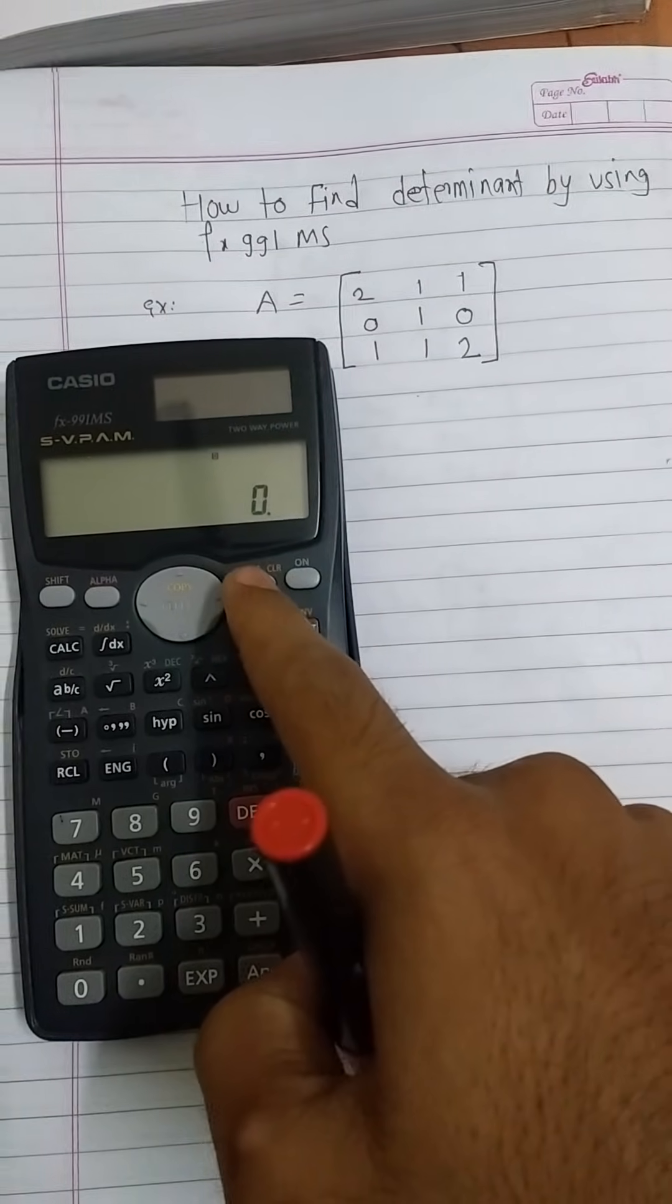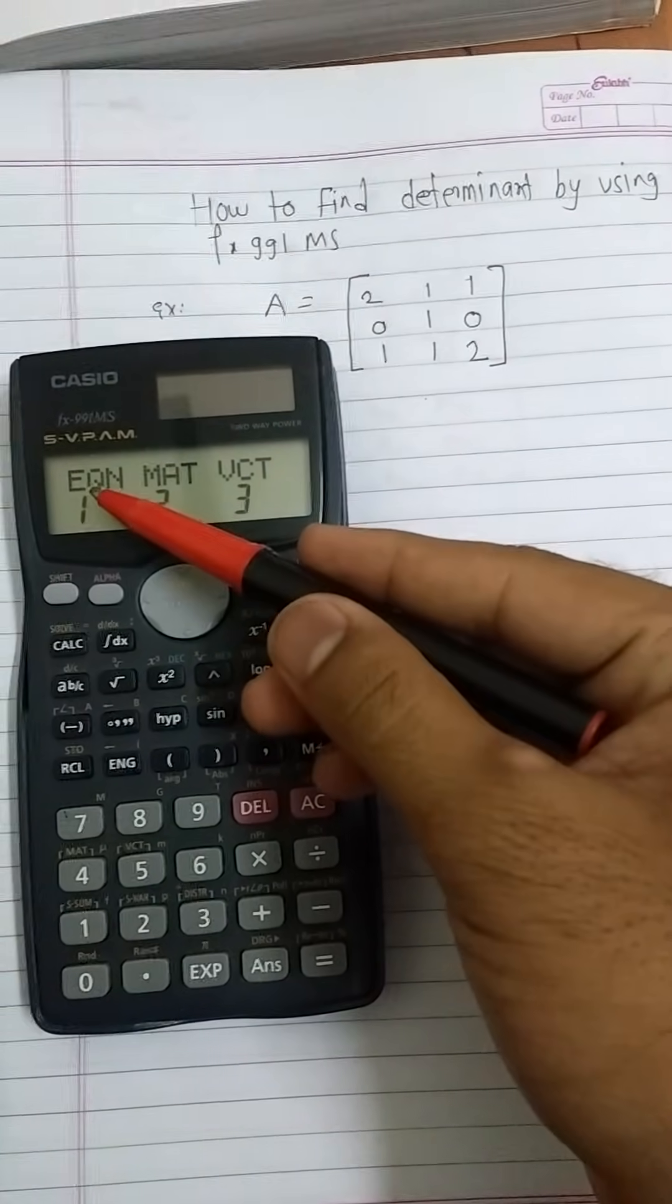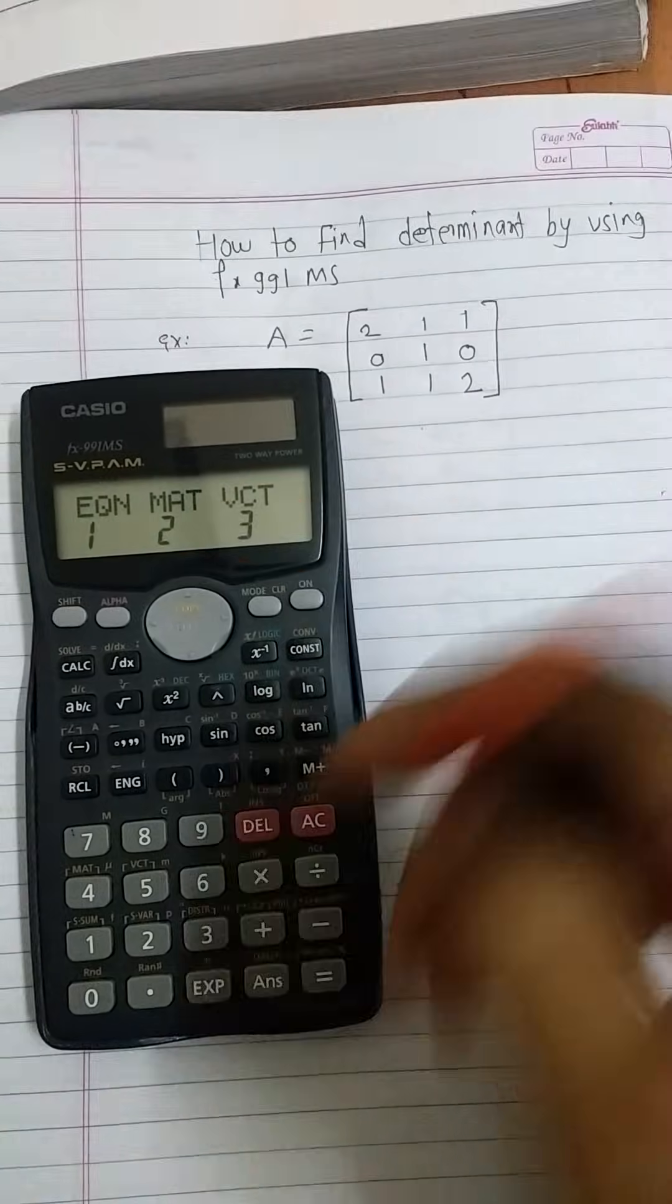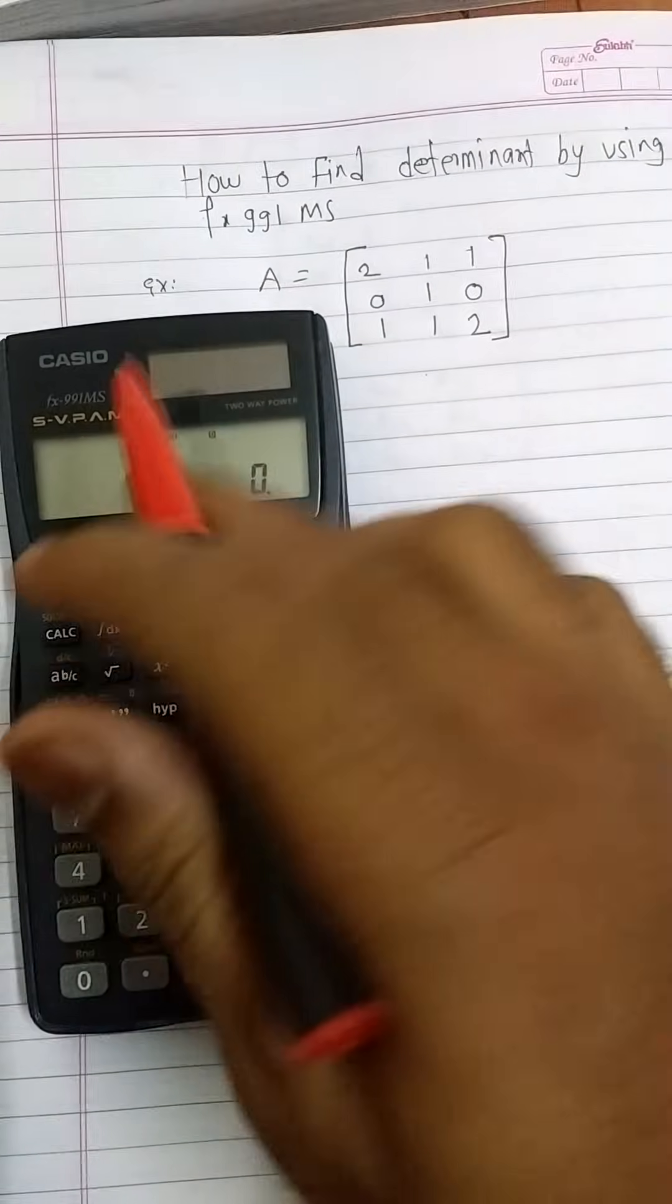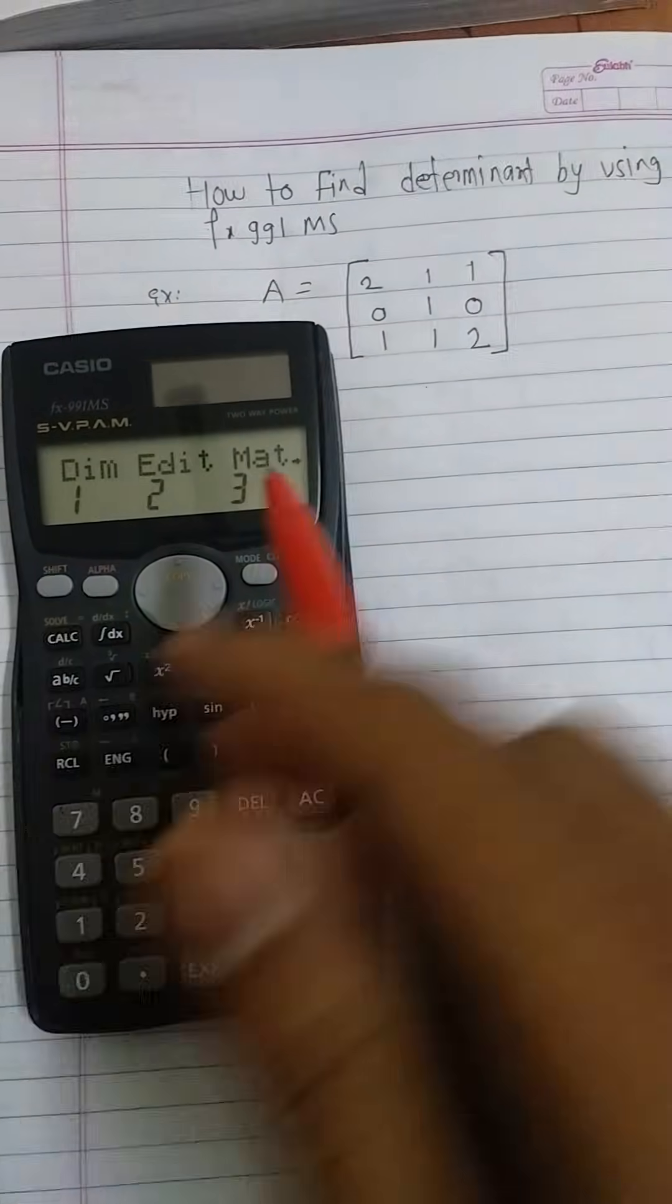For this purpose, press mode button three times. Then we will see three options: UQN, MAT, and VCT. To choose matrix mode, press button 2, then our calculator gets converted into matrix mode.